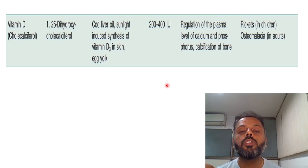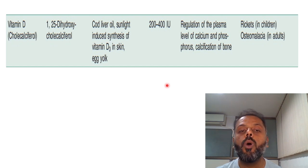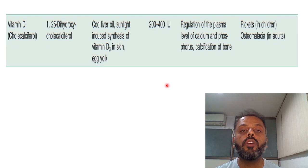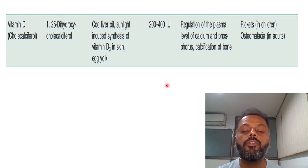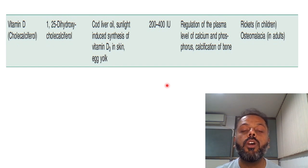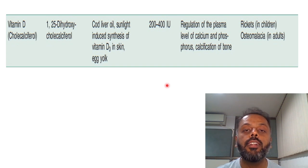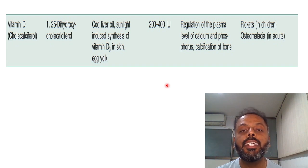The important sources of vitamin D are sunlight, cod liver oil, and egg yolk. The functions of vitamin D include regulation of calcium homeostasis — that is, maintenance of calcium levels — and bone mineralization. The regulation of calcium levels occurs at three levels: in the intestine, in the bone, and in the kidney.